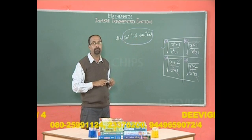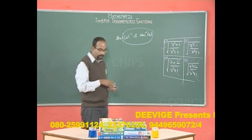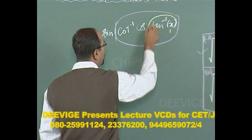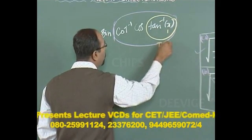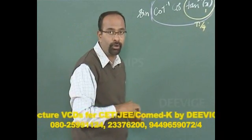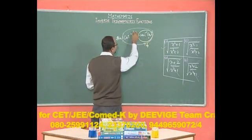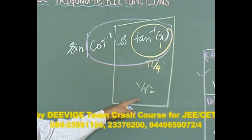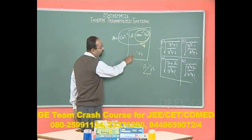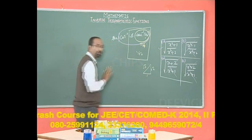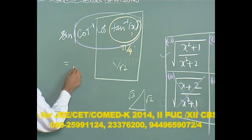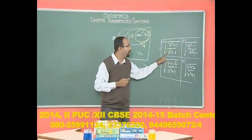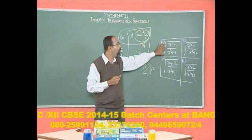Shortcut 2: Let x = 1. Then tan⁻¹(1) = π/4, cos(π/4) = 1/√2, and sin(cot⁻¹(1/√2)) = sin(sin⁻¹(√2/√3)) = √2/√3. Substituting x = 1 in option a: √((1+1)/(1+2)) = √(2/3). This matches, confirming option a is correct.